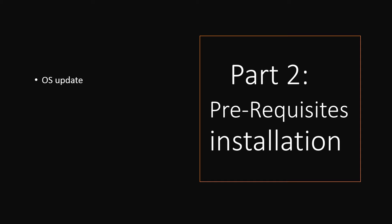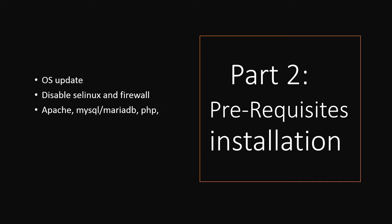In Part 2, we will be doing OS update, disabling SELinux and Firewall to avoid any permission issues while installing the softwares. We will also be installing Apache, MariaDB, PHP, and Perl modules.